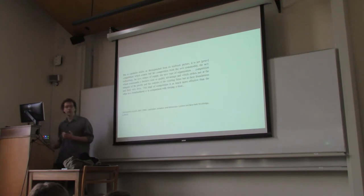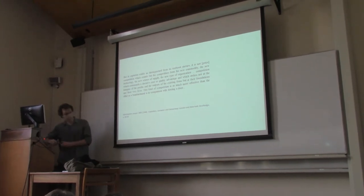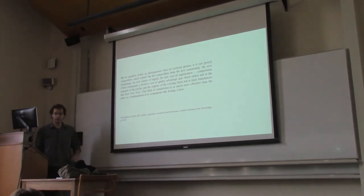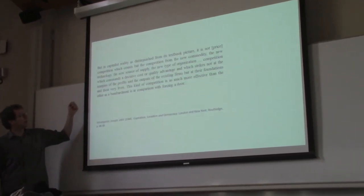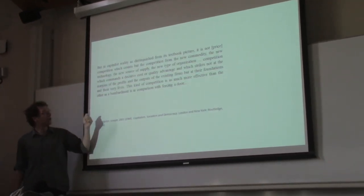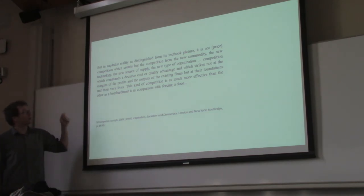How do they compete then? Joseph Schumpeter, a very important economist, wrote in 'Capitalism, Socialism and Democracy' in 1944 - because this isn't a new phenomenon, markets have been oligopolized for decades and decades - he said: 'But in capitalist reality, as distinguished from its textbook picture, it is not price competition which counts, but the competition from the new commodity, the new technology, the new source of supply, the new type of organization. Competition which commands a decisive cost or quality advantage, and which strikes not at the margins of the profits and the outputs of the existing firms, but at their foundations and their very lives.'